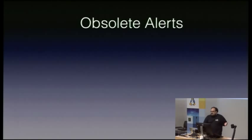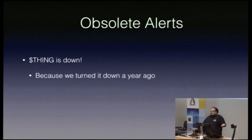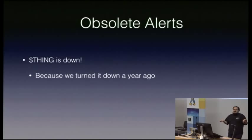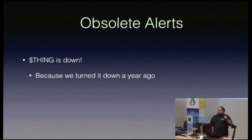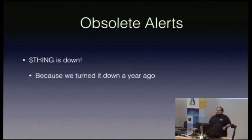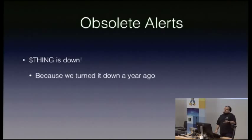Obsolete alerts. This thing is down — because we turned it down a year ago. That might seem a little obvious, but it's incredibly common for sites not to have good turn-down procedures for systems or processes. We've upgraded our service and we no longer need this auxiliary server. Making sure you actually turn stuff down when you're meant to is really helpful. Quite often we've seen the obsolete box is still there and we don't use it — then a year later it blows a power supply and now it's alerting. It shouldn't have even been there to alert.